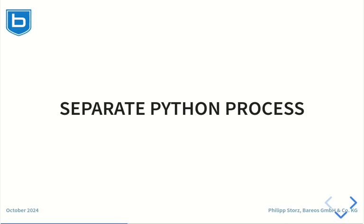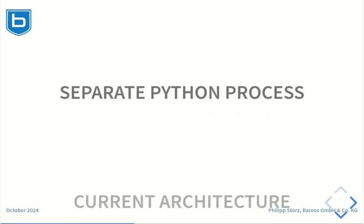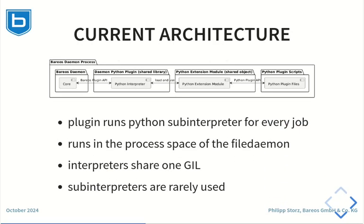The next new feature is the new Python plugin architecture. Let us first have a look at the Barrios 23 Python plugin architecture. Barrios allows writing plugins in Python. The Barrios daemon loads a shared library containing the Python plugin. The Python plugin itself runs a Python sub-interpreter for every job. The Python interpreter loads the Barrios Python extension module and executes the Python plugin files. Every Barrios plugin API call is translated into a Python call which can then do the required calls back into the core.